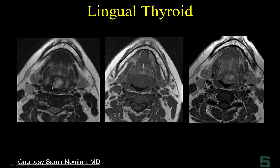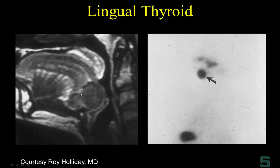Another example on T2-weighted, non-contrast T1, and contrast-enhanced T1 MR — it looks just like squamous cell carcinoma. But if the patient is hypothyroid, consider lingual thyroid tissue. The tip-off is the location. On sagittal T1-weighted image, lingual thyroid tissue is nicely shown. If uncertain, perform a nuclear medicine study — in this case, the pertechnetate uptake corresponds with the abnormality seen on non-contrast T1-weighted MR.